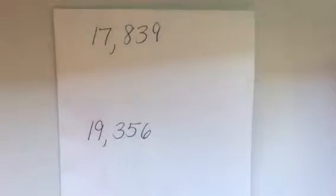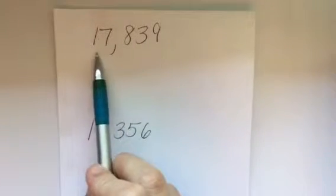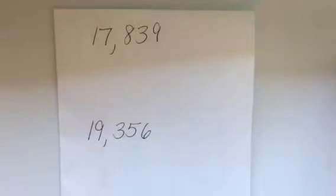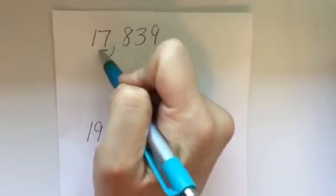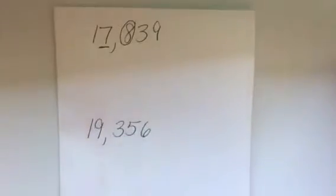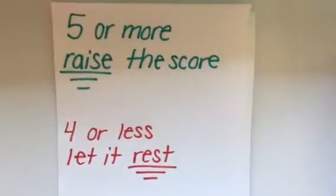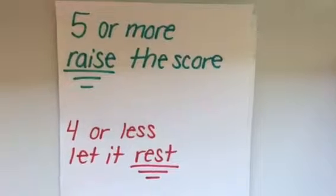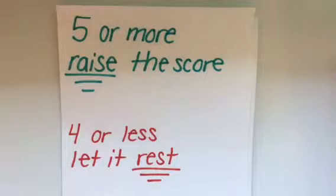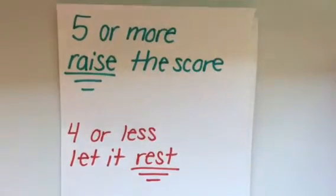We're going to be looking at the thousands place first. You're going to look at your number — we have 17,839. Since we're rounding to the nearest thousand, we're going to underline the digit in the thousands place and circle the digit directly to its right — so that would be the eight. That's where our saying comes into play: five or more raise the score, or four or less let it rest. If the number in the circle is five or more, you're going to raise the number that you've underlined. If it's four or less, you're going to leave the underlined number alone.